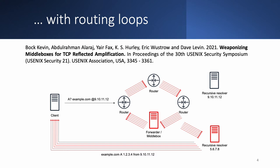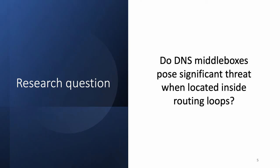As in the previous slide, the original query destination 9.10.11.12 is never reached. In our paper, if such a destination IP triggers multiple responses, we call it an amplifier — so 9.10.11.12 is an amplifier. The whole idea of this paper was to enumerate amplifiers and to understand whether middle boxes pose a serious threat when located inside routing loops.